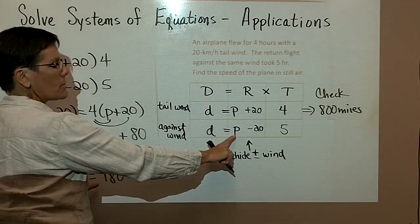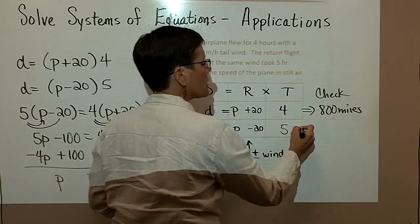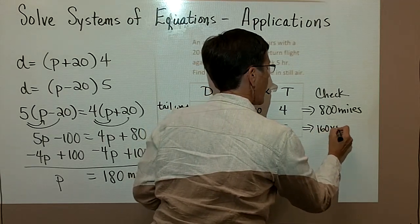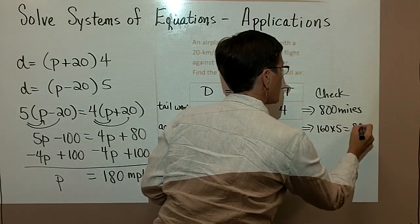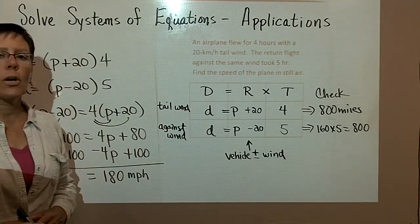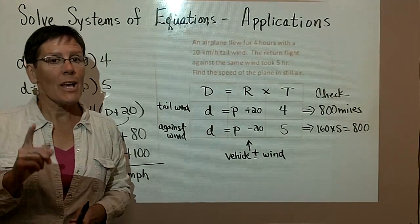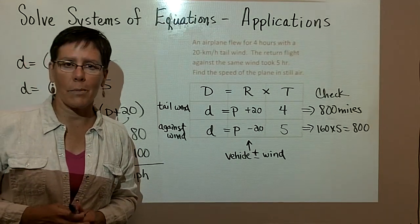In contrast, against the wind at 180 minus 20, that's 160 miles per hour. But 160 times 5 hours is going to be 800 miles as well. So I can see that that solution is a good one for this particular situation. I'm going to pause and we're going to do one more motion application.